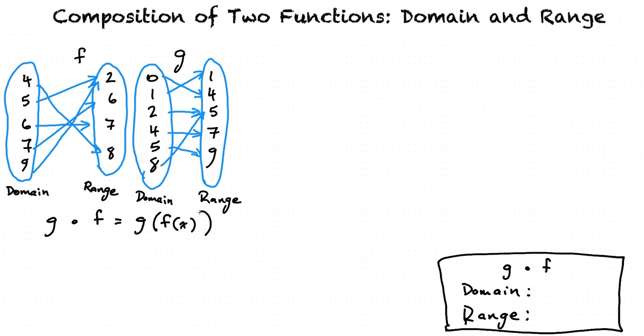So for example, if we wanted to find g of f of 4, we look here and see f of 4 equals 8. So this thing here, f of 4, is 8, meaning we're finding g of 8.